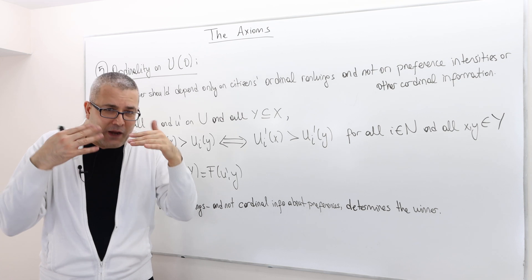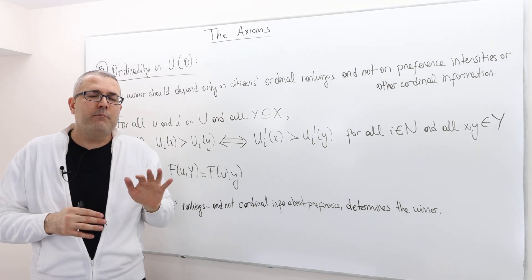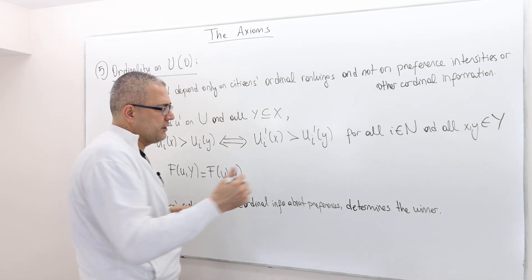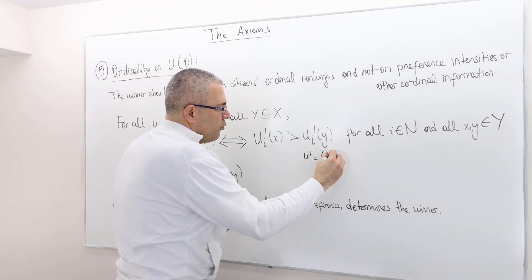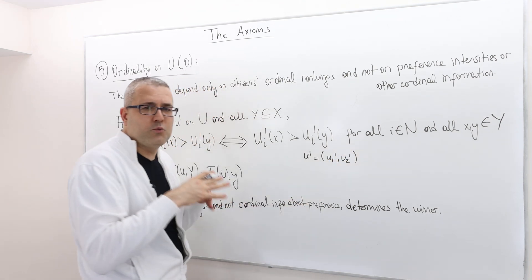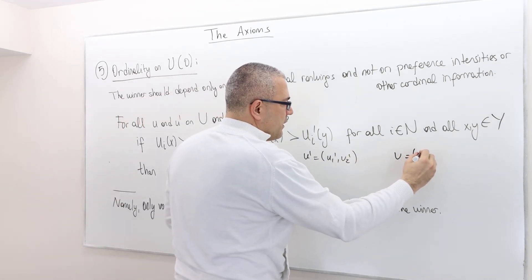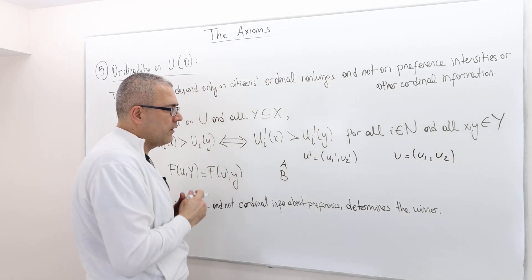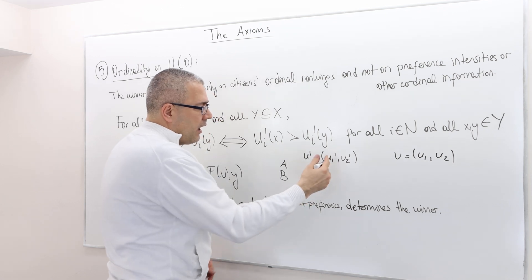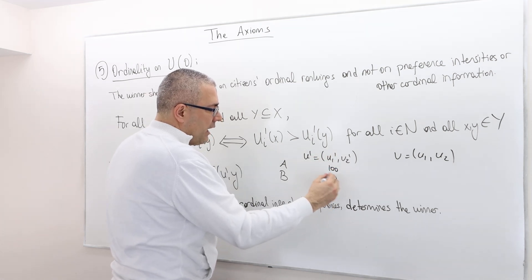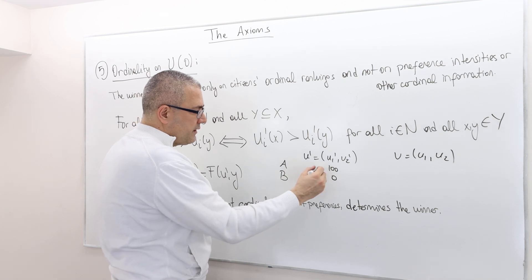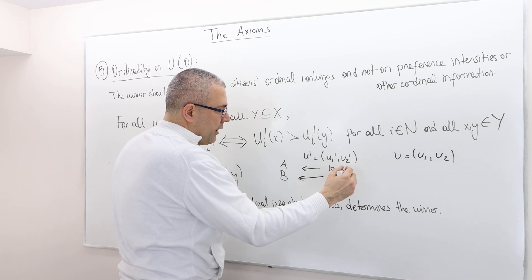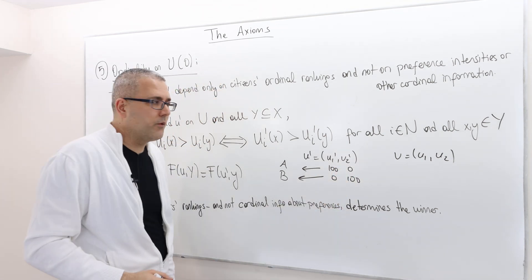So for any individual I, here's, for example, two utility functions. So U prime, I have U1 prime, U2 prime. Let's suppose we have only two voters, and then U is U1 and U2. And I have two alternatives, A and B. So here, U1 prime is, for example, 100 and 0. So this is utility of A, this is utility of B. And U2 prime is 0, 100.